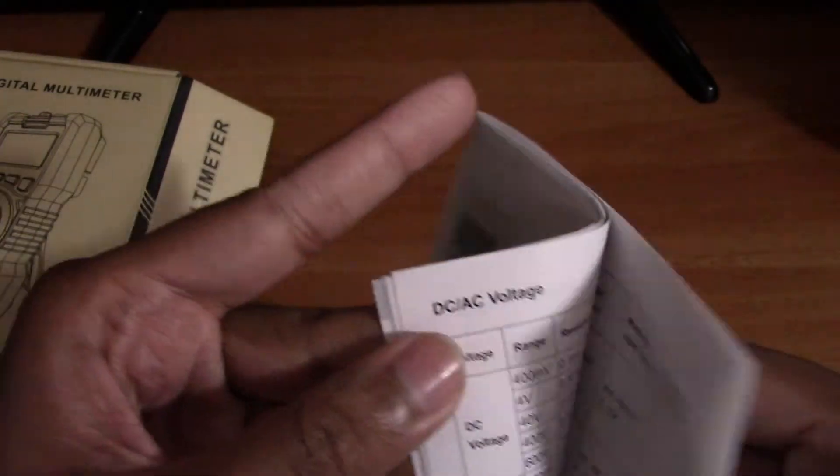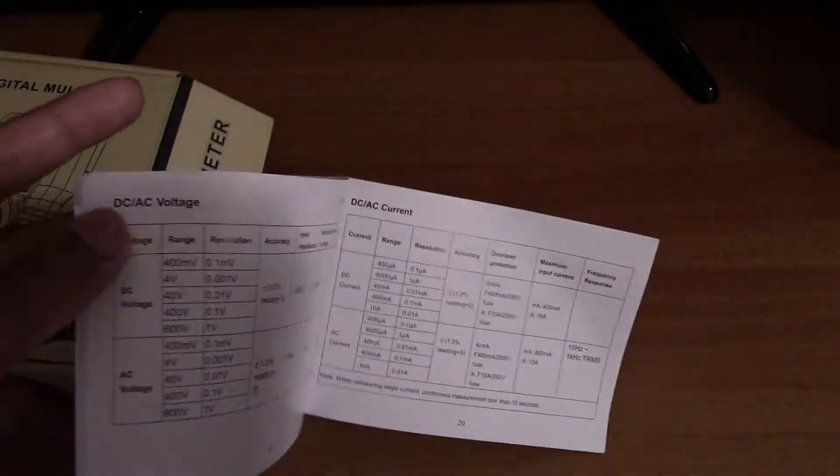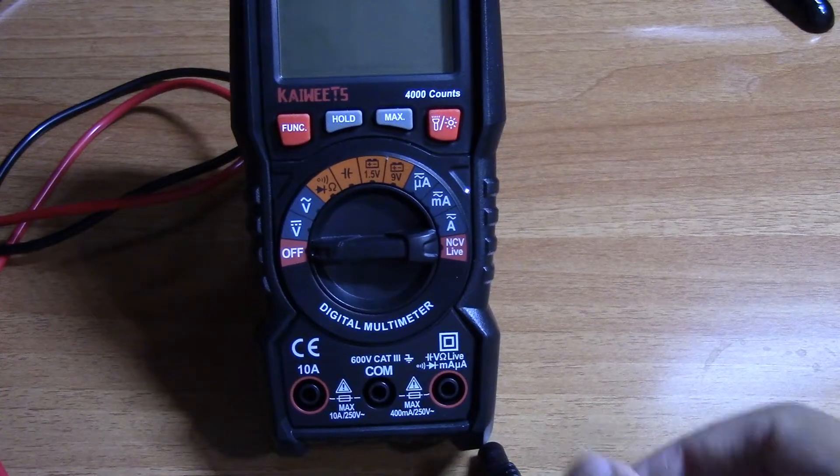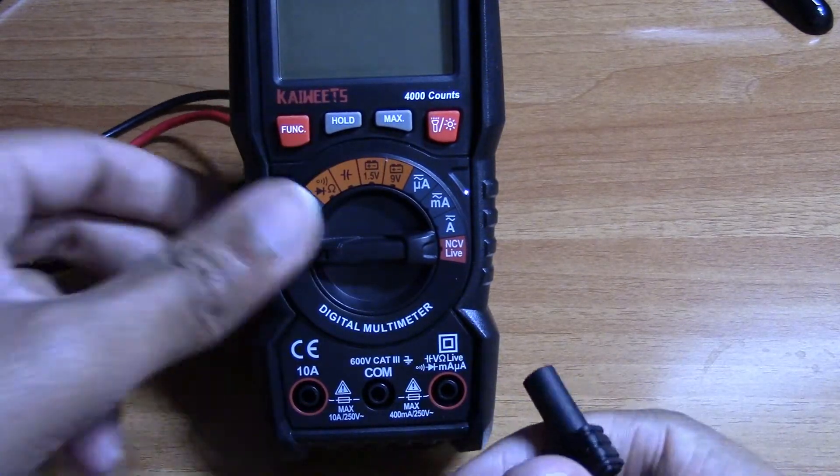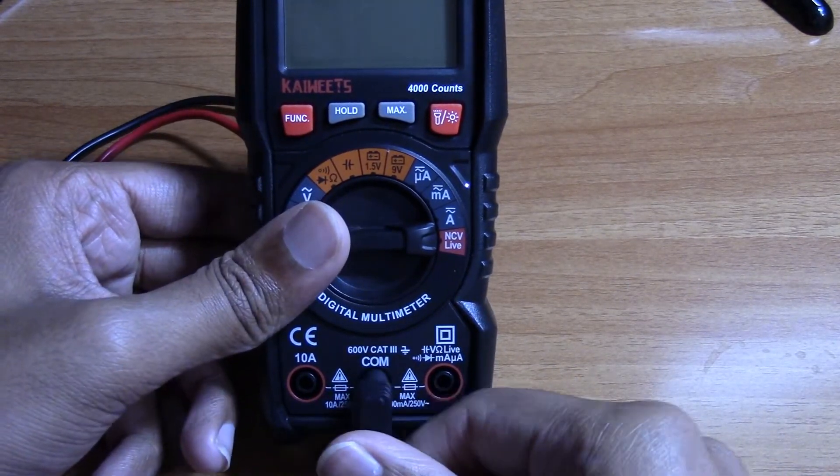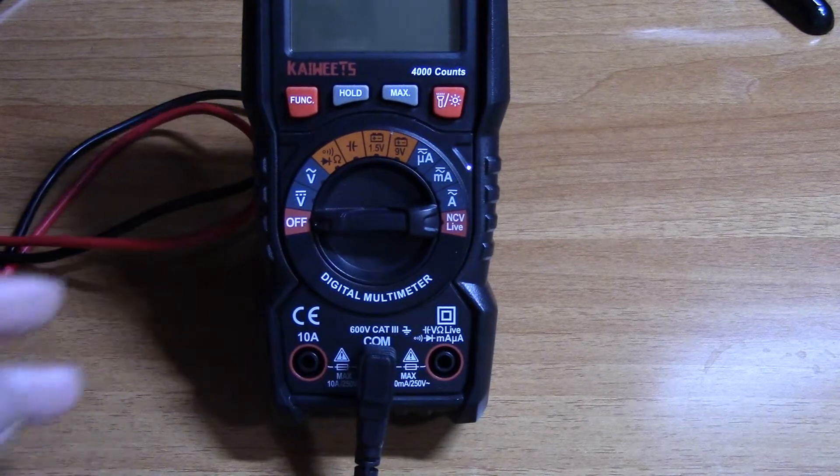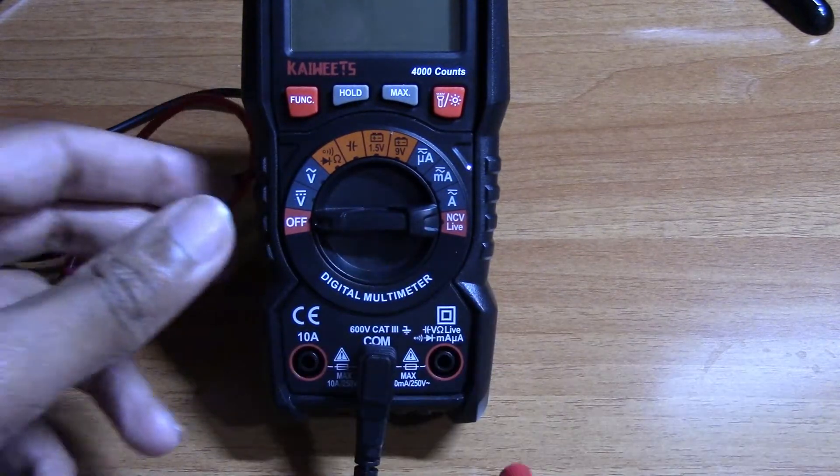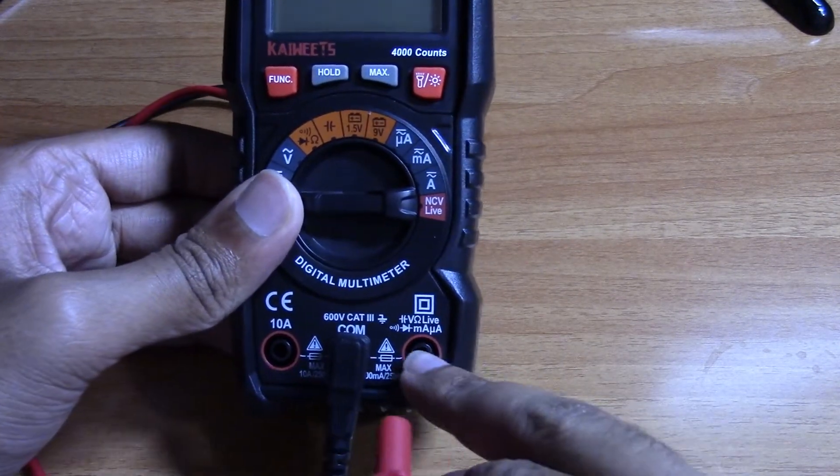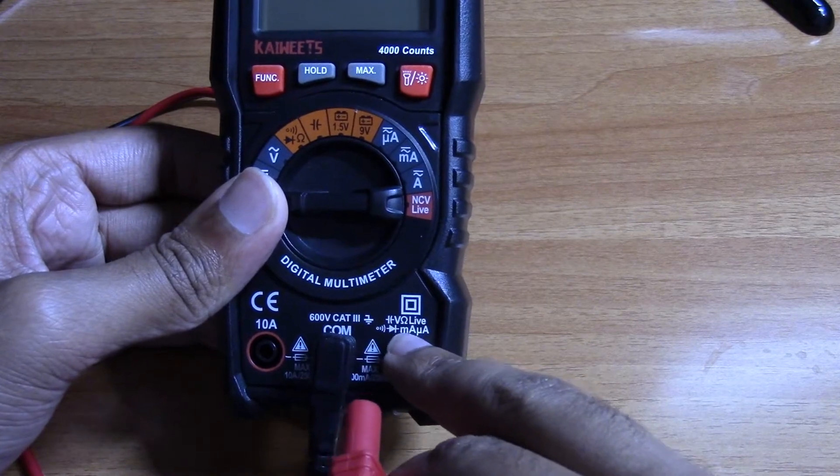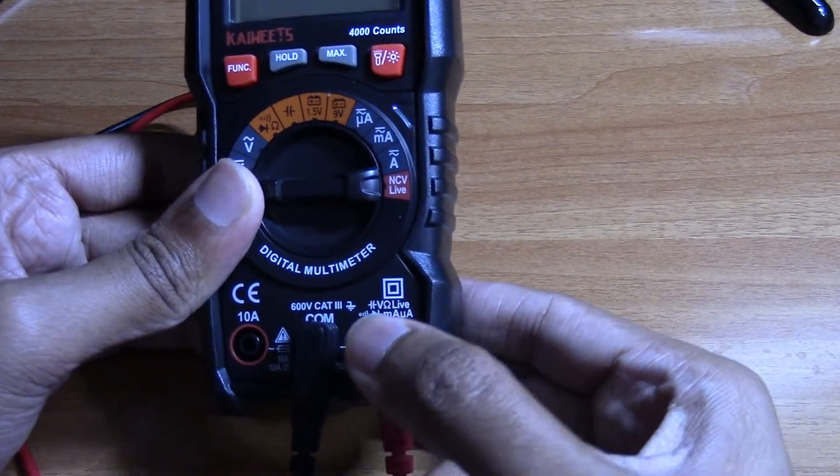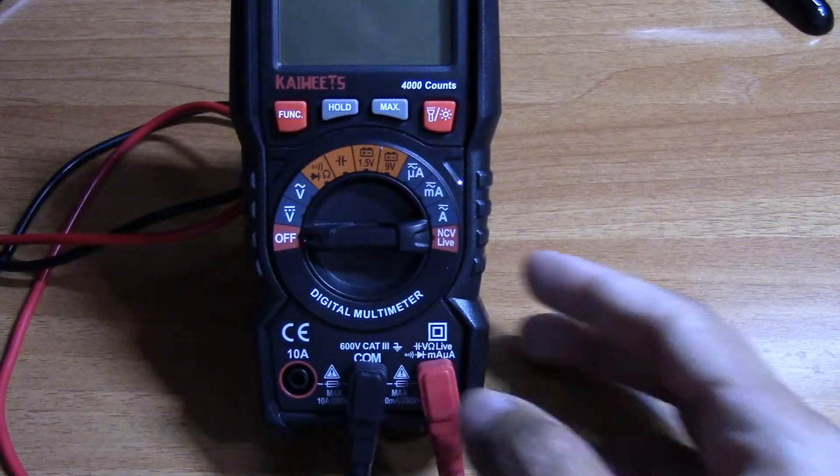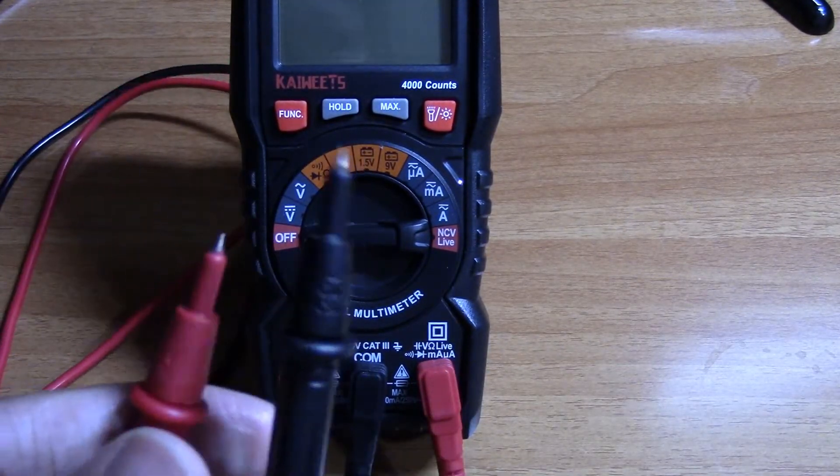To get started, the black probe goes inside COM and the red goes inside this one over here, you see voltage ohms right here. These are your probes.